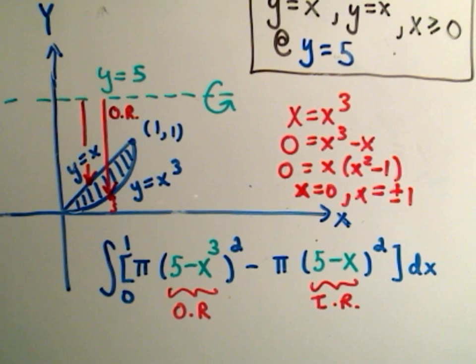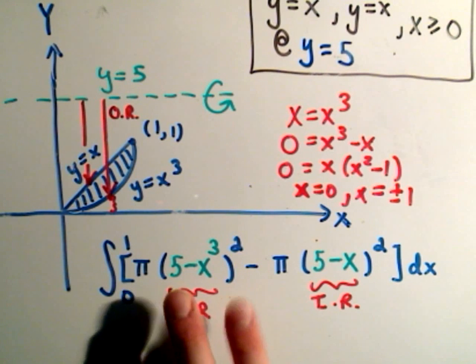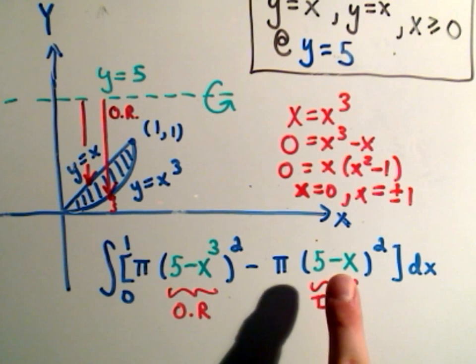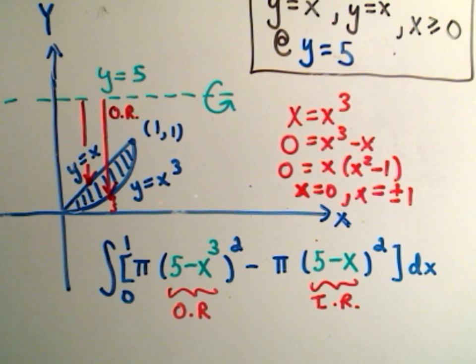So again, to integrate, I would factor out the pi. You would have to take the 5 minus x cubed and foil it out. The same thing with the 5 minus x. Collect your like terms. And then it should just be using a bunch of the power rule stuff.